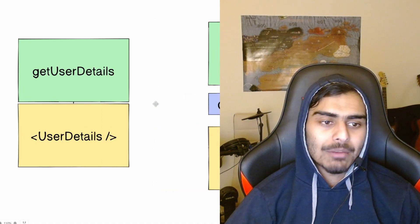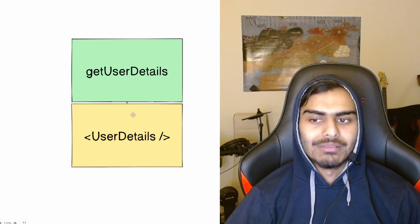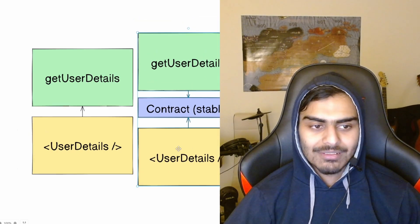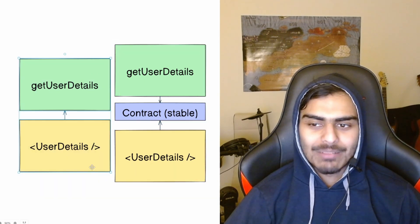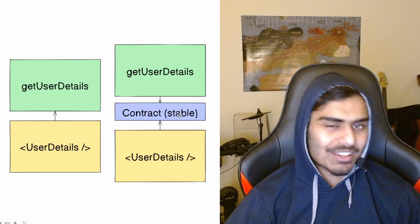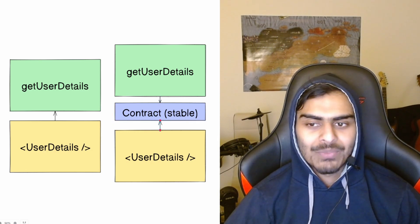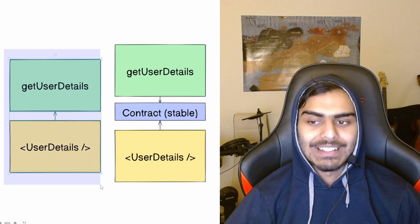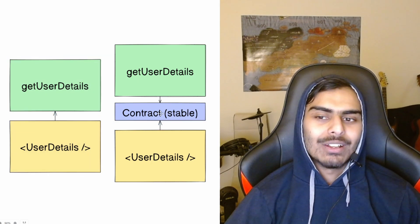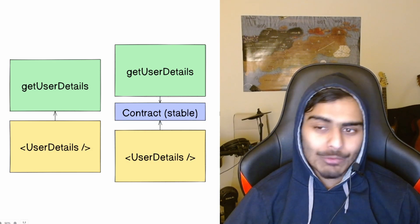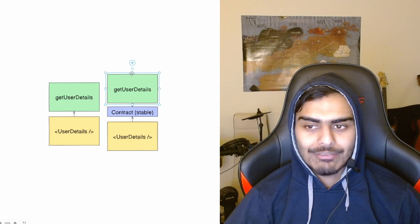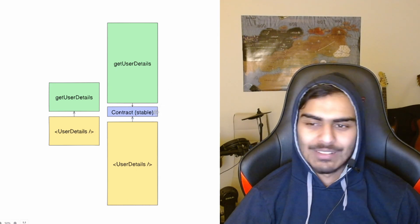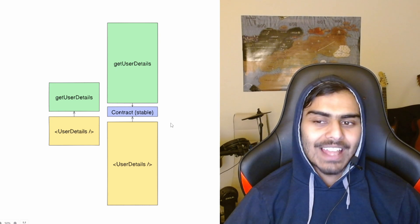Going back to the diagram: before we had the contract, things were relatively simple — two functions, one calls the other. Now with the contract, things are slightly more complicated. You have three things, some extra overhead to come up with the contract and ensure both sides use it. This is definitely more complex — but if these functions start to get big, that small contract overhead becomes negligible, and it brings a lot of benefits.